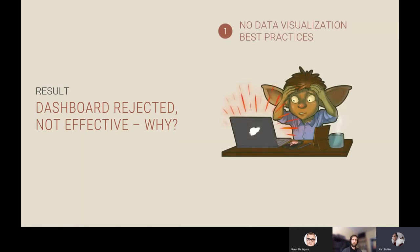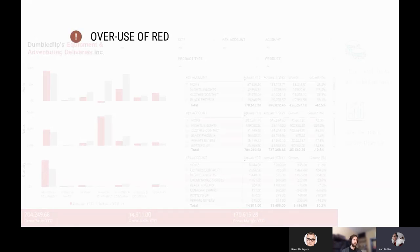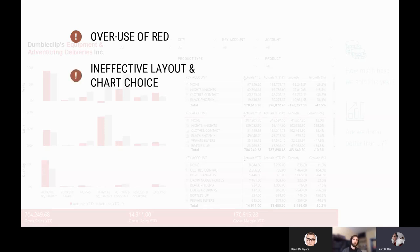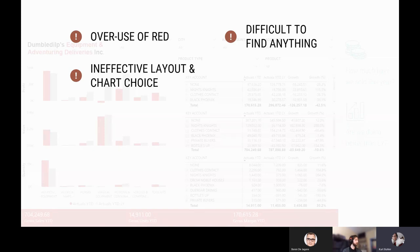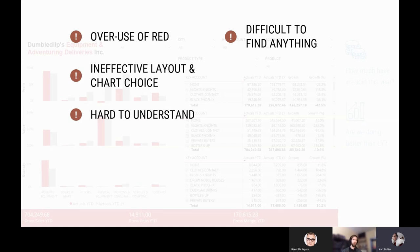This dashboard was rejected — it wasn't effective. The executives' feedback was that the report doesn't follow any data visualization best practices. Specifically, there is an overuse of red, which is very overwhelming and has an implicitly negative association. The chart layout and chart choices are ineffective, making it difficult to find anything. The view is very cluttered with a lot of ink, and things aren't labeled well or labels are missing entirely, so users waste a lot of time just thinking about what they're looking at.